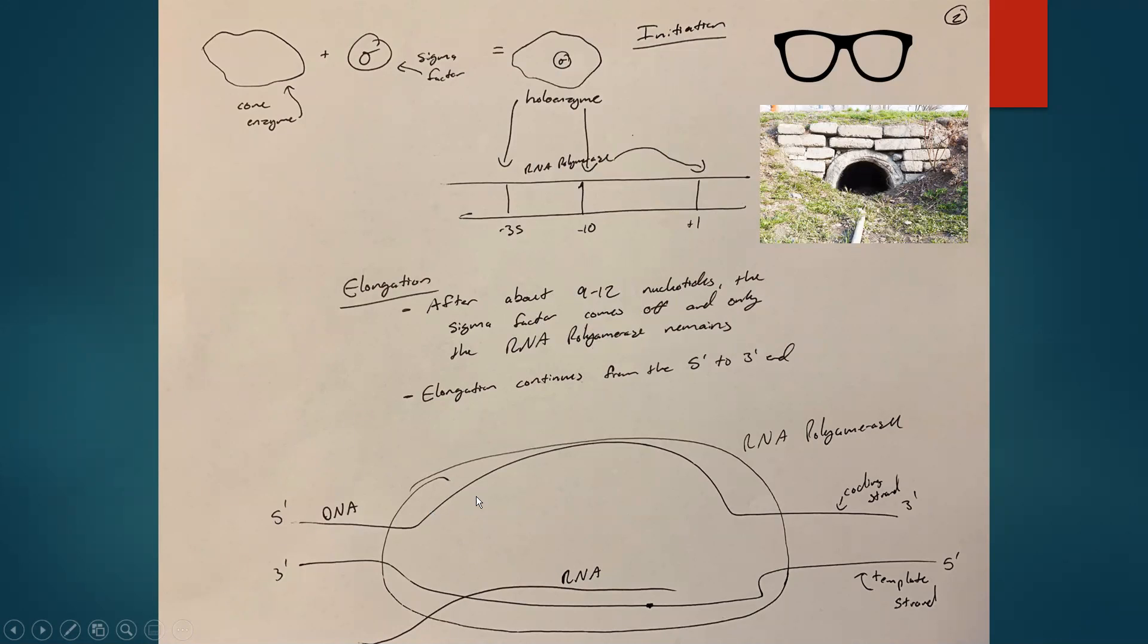Here's what elongation looks like with the transcription bubble. The RNA polymerase is this circle on the outside. Here's my 5 prime to 3 prime and then 3 prime to 5 prime, and my strand of RNA down here.